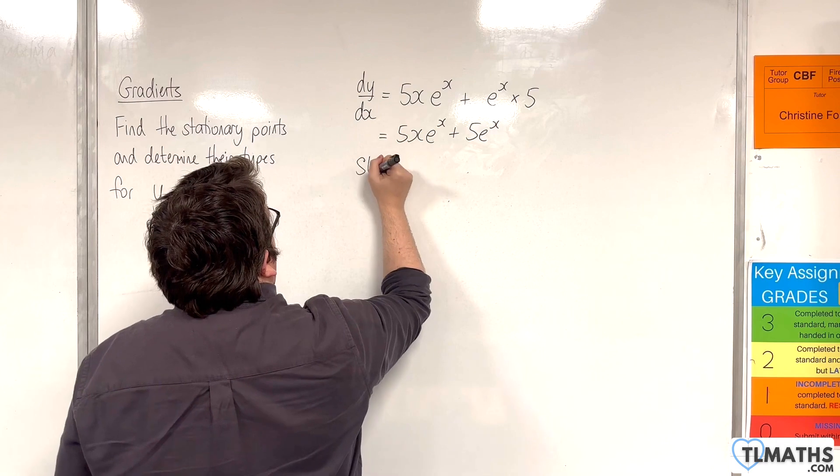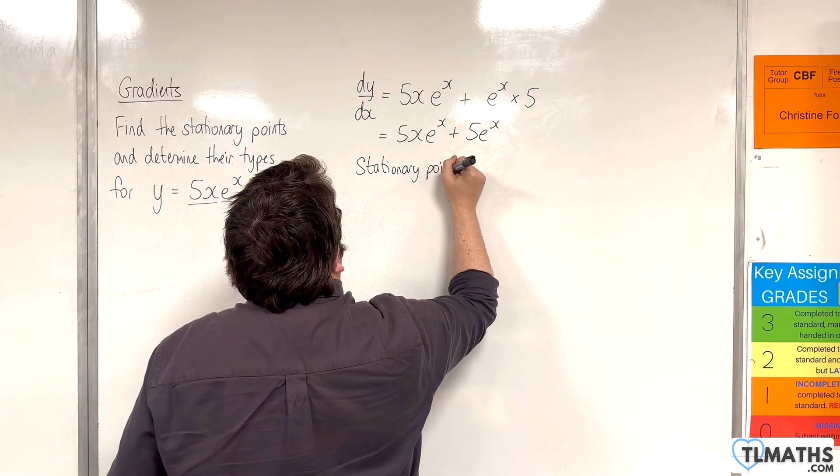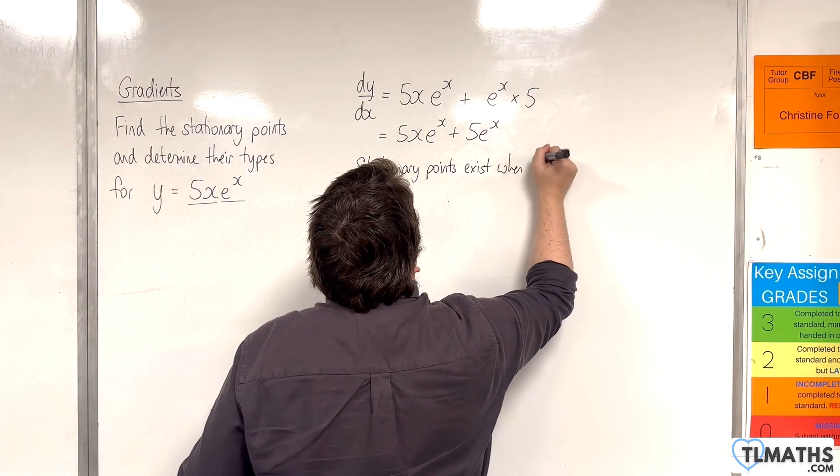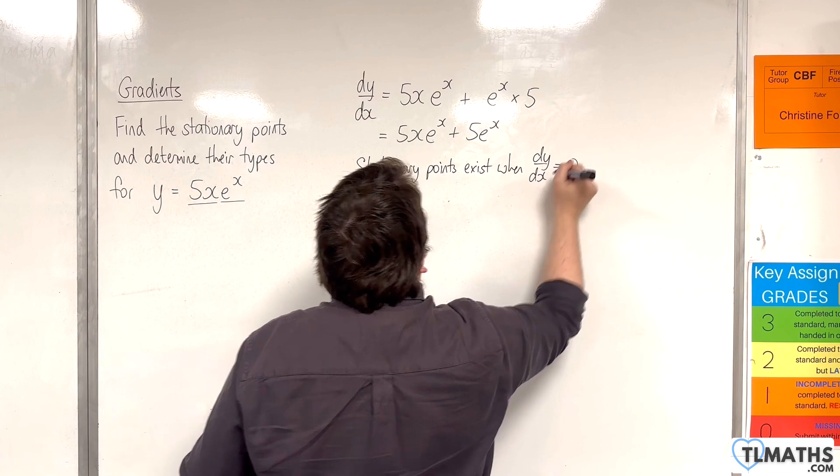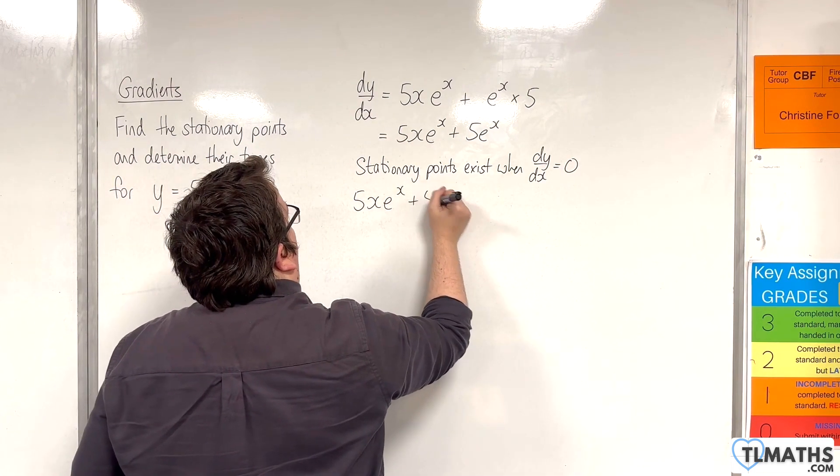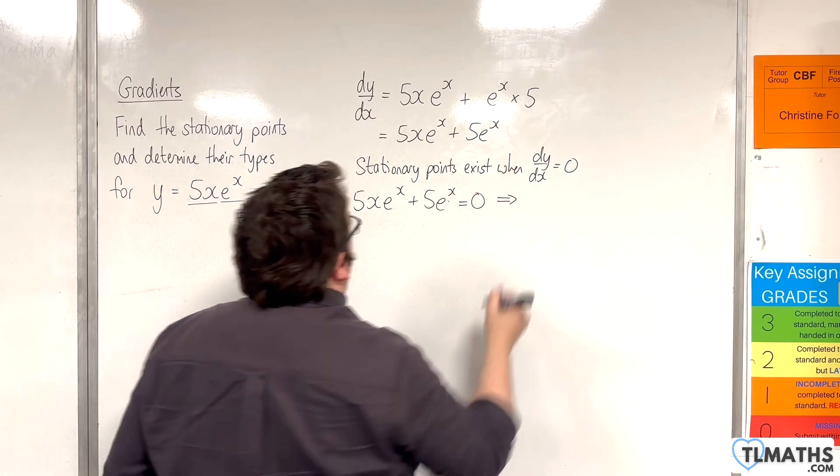Now, stationary points exist when dy by dx is 0. So 5x e to the x plus 5 e to the x is equal to 0. We now need to solve this equation.